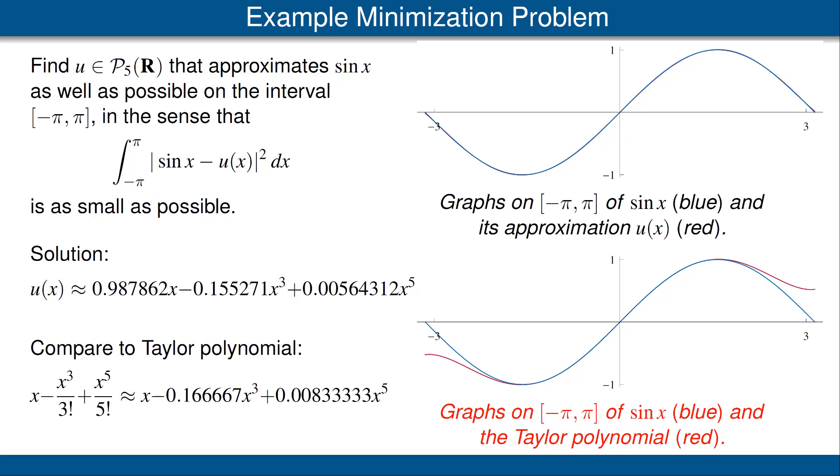But as we get close to around 2 and negative 2, we can see a huge difference. In other words, the approximation we have found, which is not the Taylor polynomial, does a better job on the average than the Taylor polynomial. This is really interesting that we have used linear algebra to improve upon something that we learned in calculus.